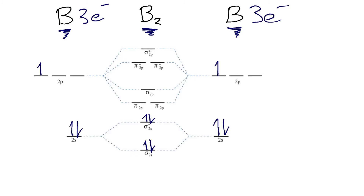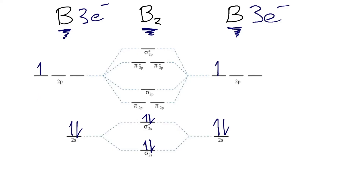Now we'll head up to the 2p atomic and molecular orbitals. We have two electrons — one from each boron — and we have six molecular orbitals, because we have six total atomic orbitals, three from each atom. The number of orbitals must be conserved, meaning we'll have a total of six molecular orbitals. We won't fill all of them since we only have two electrons, so we'll start by filling the lowest energy molecular orbitals first, in accordance with the Aufbau principle.